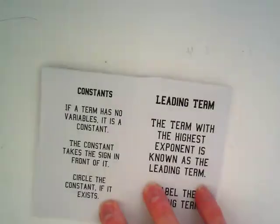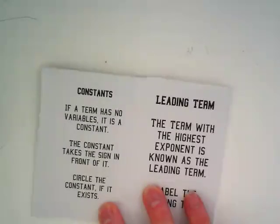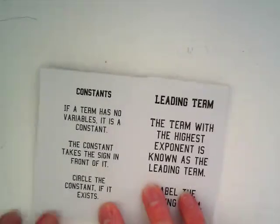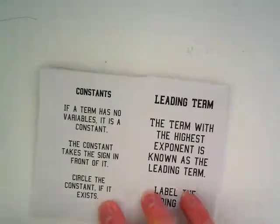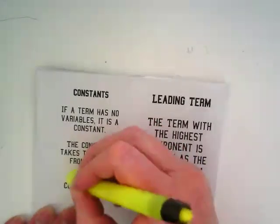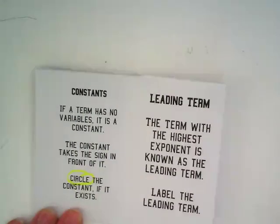Turn the page. Constants. If a term has no variables, it is a constant. The constant takes the sign in front of it. We will be circling the constant if it exists in our polynomial.